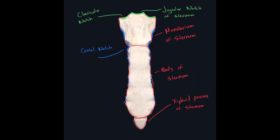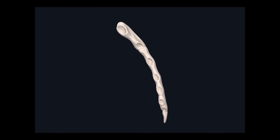The last landmark on the sternum is located right at the junction of the manubrium and the body of the sternum, where this line is. This is called the angle of the sternum. You may be thinking why it's called the angle since it looks pretty flat. If we look at it from a lateral view, we can see that the manubrium and the body of the sternum are going in two different planes of direction. That is why this point where they meet is called the angle of the sternum.